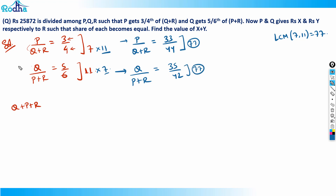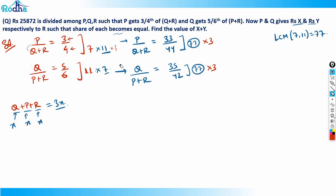Now P and Q give rupees X and rupees Y to R such that the share of each becomes equal. If all three get equal shares, the total must be 3 times that equal share — so the total must be a multiple of 3. Currently 77 is not a multiple of 3, so I need to multiply further by 3. These kinds of adjustments you keep making when working with ratios.